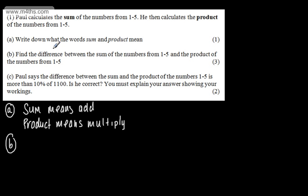In part B, we're asked to find the difference between the sum of the numbers from one to five and the product of the numbers from one to five. So this question carries three marks. I'm saying to myself, how can I write three marks worth of workings and an answer to convince the examiner to give me three marks? So let's go ahead and write the sum. The sum will be the numbers from one to five. So it'll be one plus two plus three plus four plus five. So if we add these up, we're going to get 15.